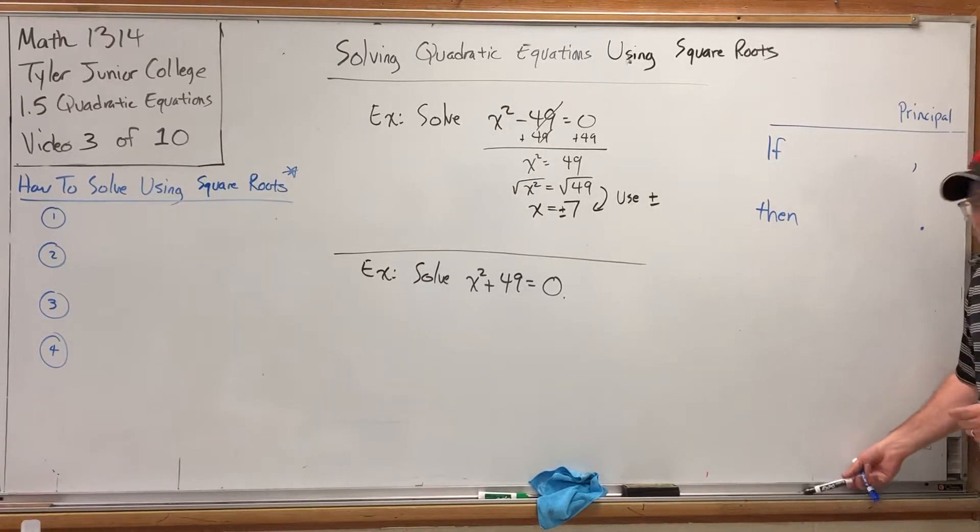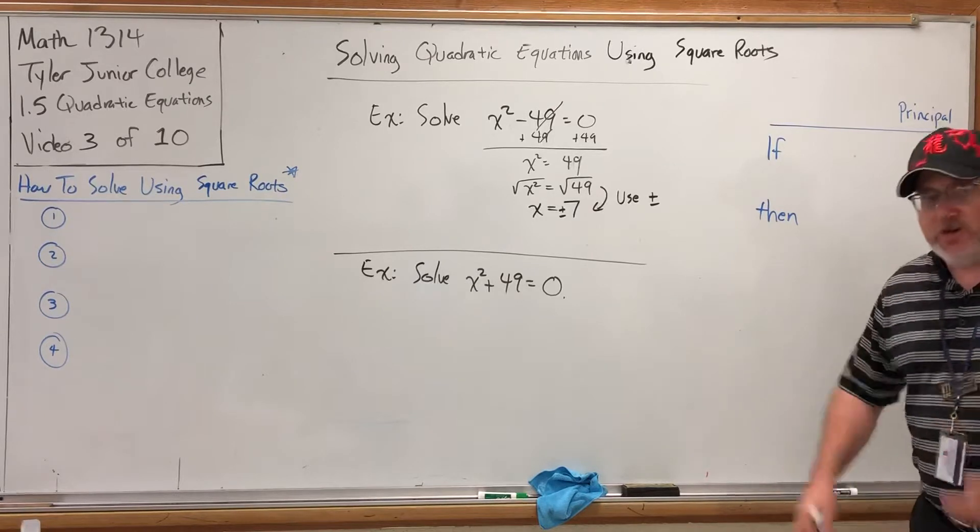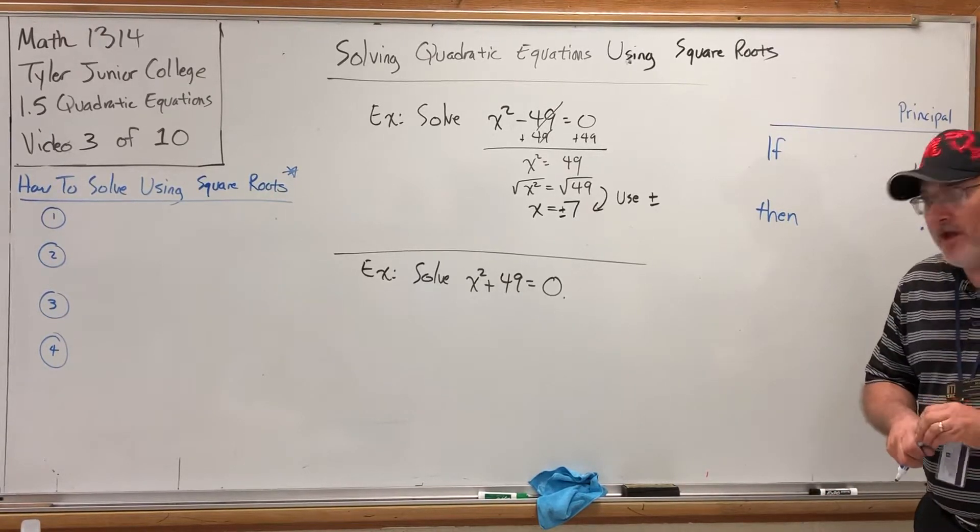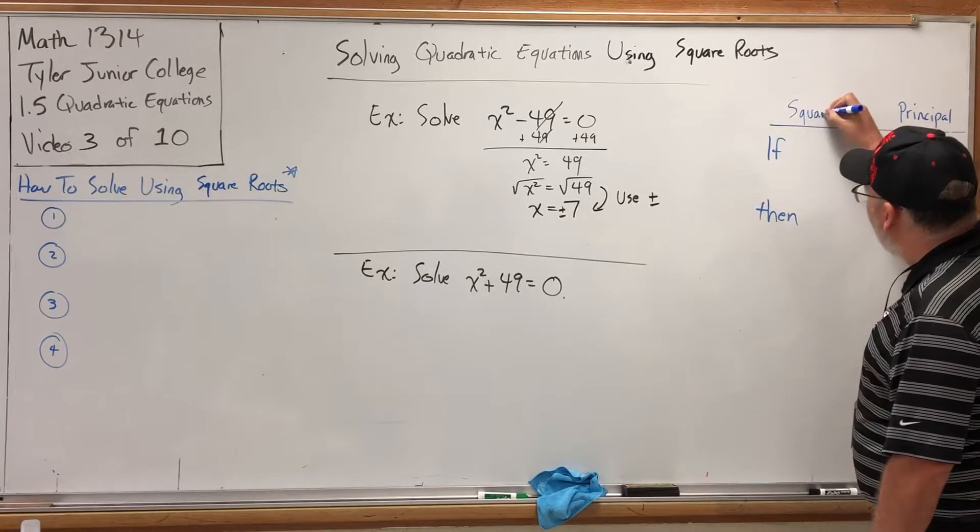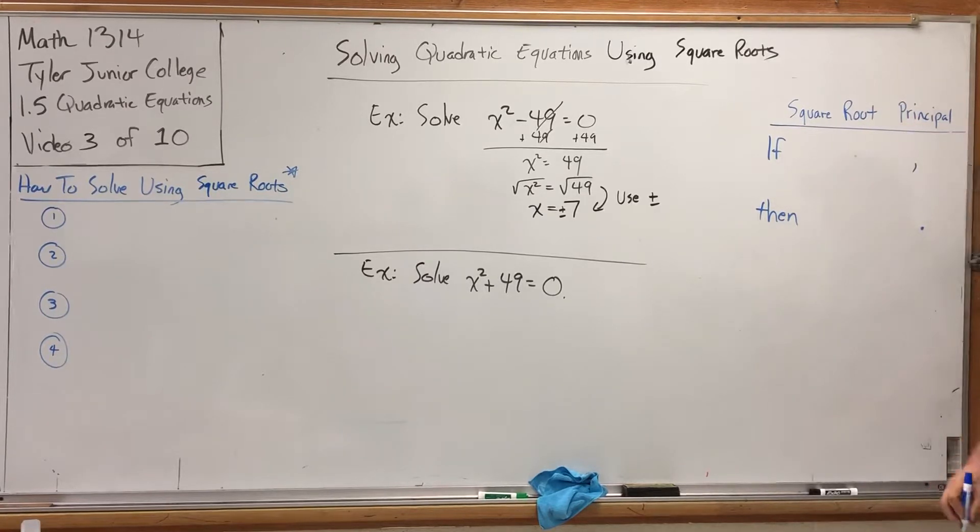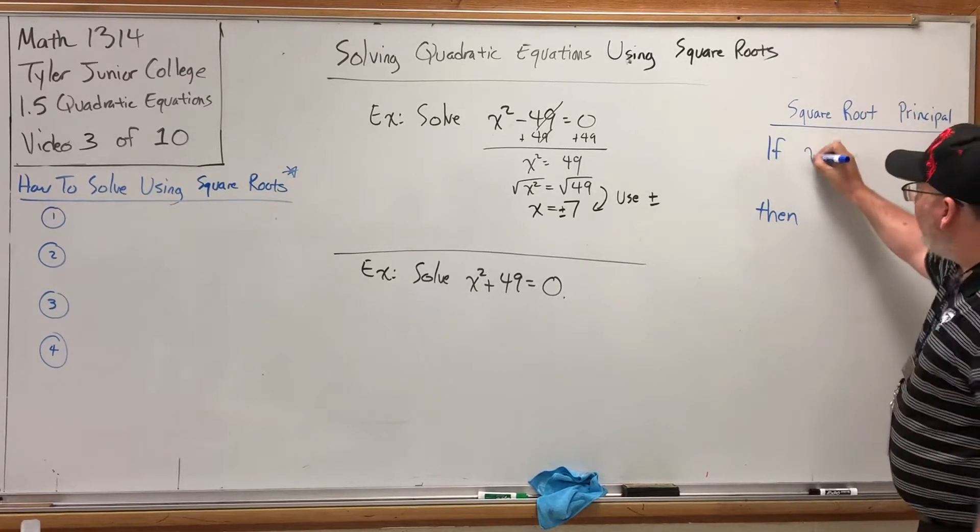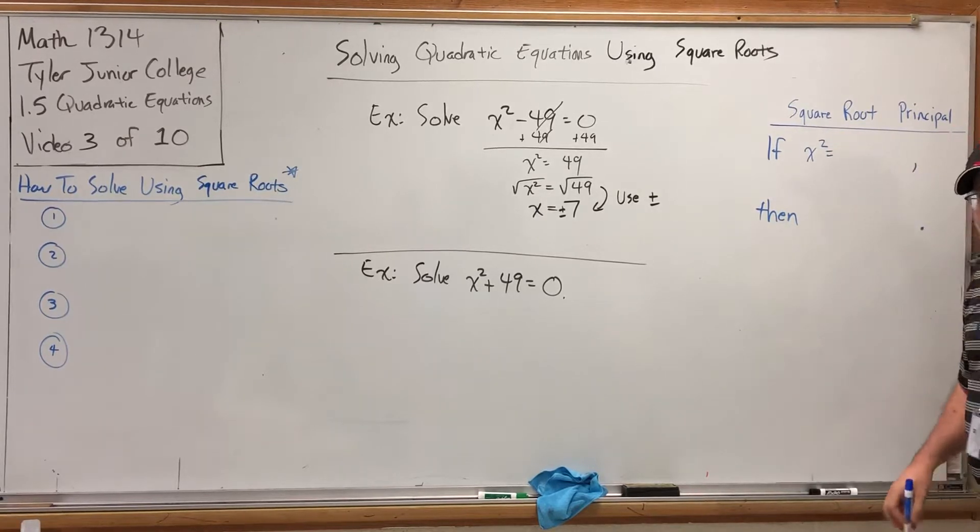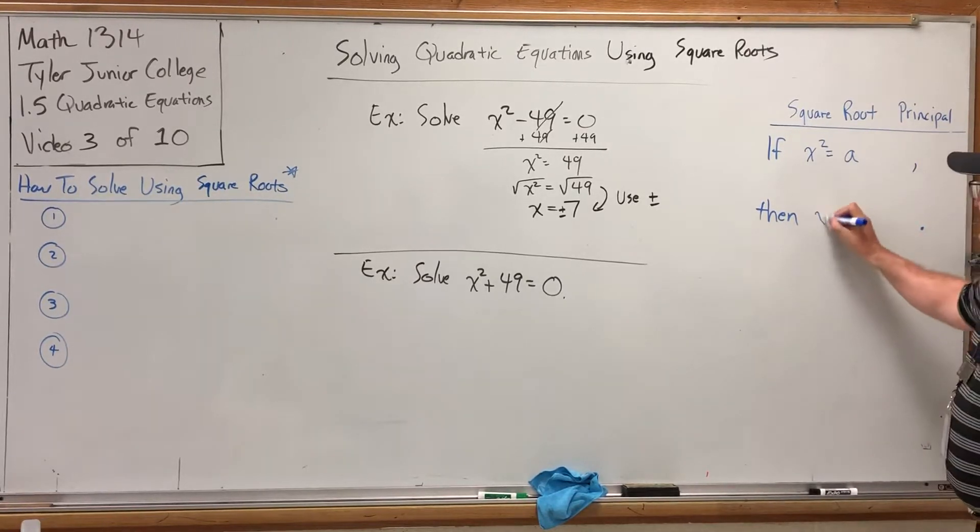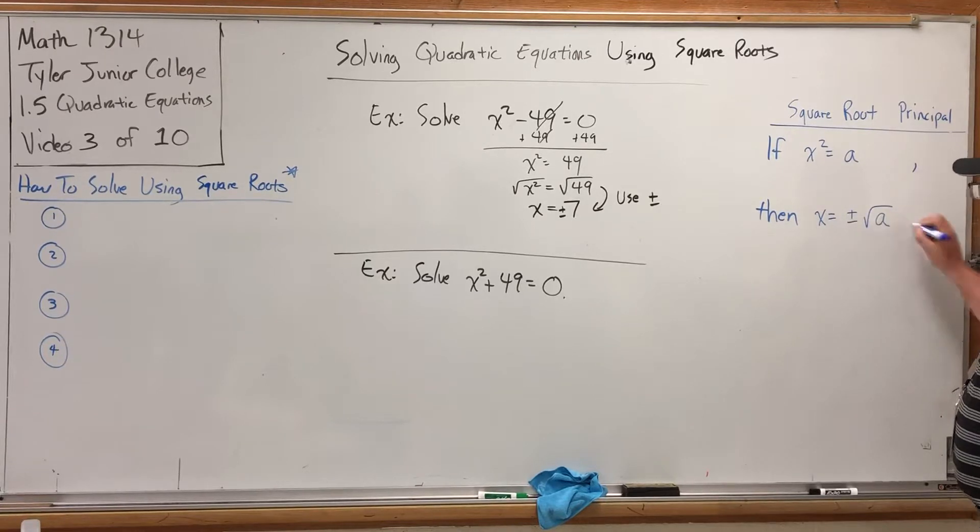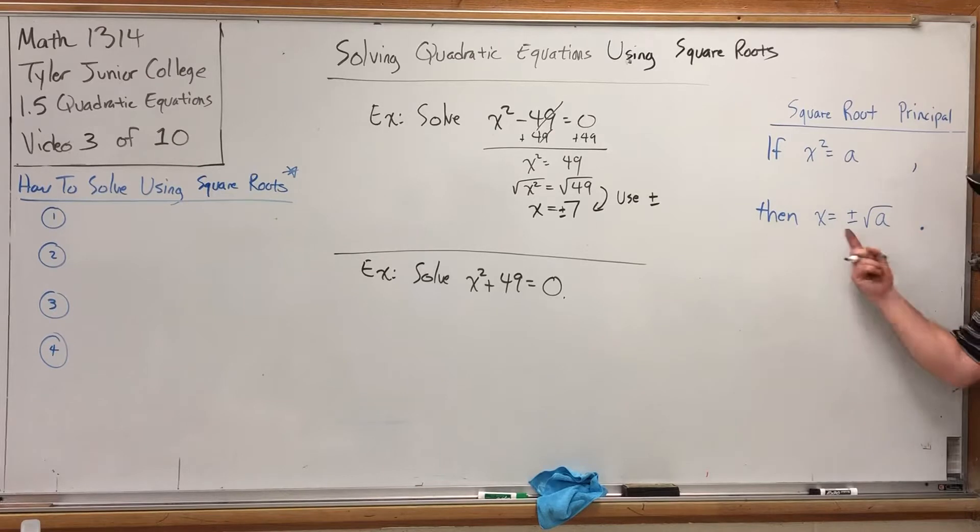In order to do this, I need to introduce you to another principle. Now, when we solve the equations by factoring, we took advantage of something called the zero product principle. For this technique, we're going to take advantage of a principle called the square root principle, appropriately enough. And it goes something like this. If you have an x² and it is equal to a number, let's just say it's equal to a, for lack of a better number, then x is equal to plus or minus the square root of a. So, essentially, it's saying, go ahead and square root both sides, but don't forget the plus minus. Don't forget the plus minus. Don't forget the plus minus. Easiest thing to mess up in this type of problem.